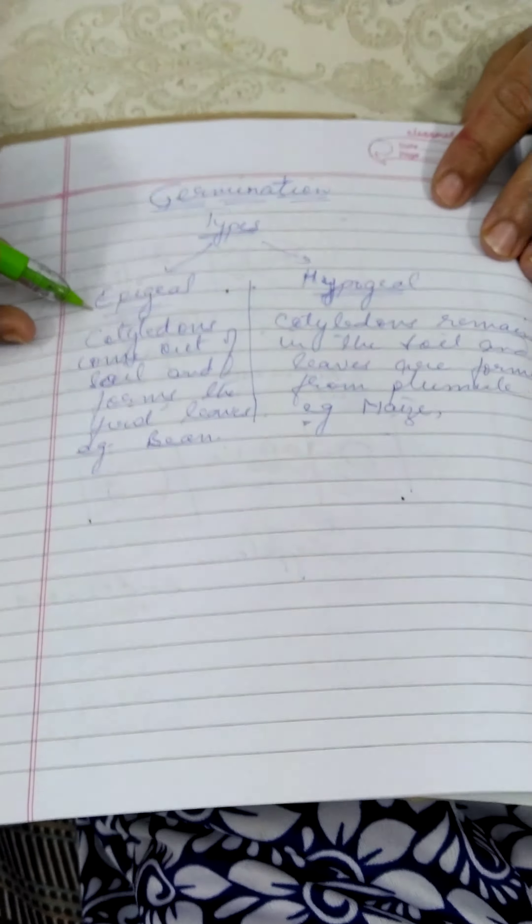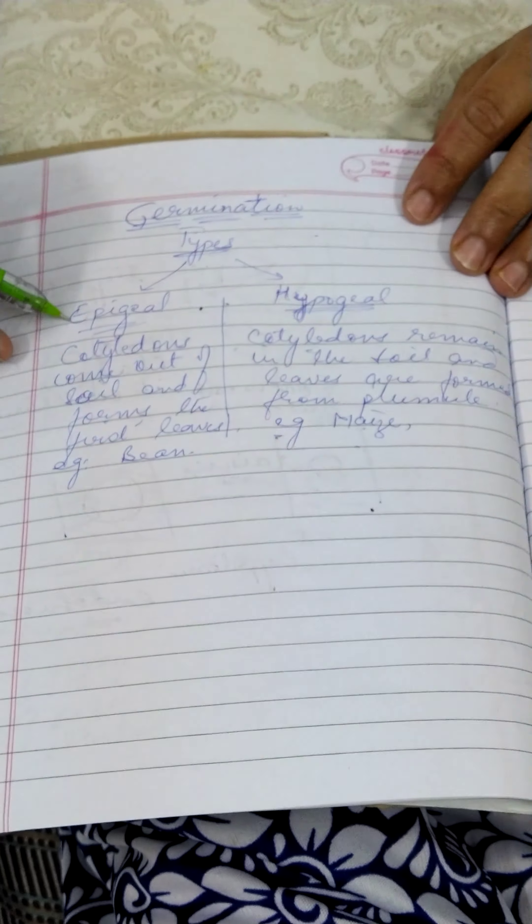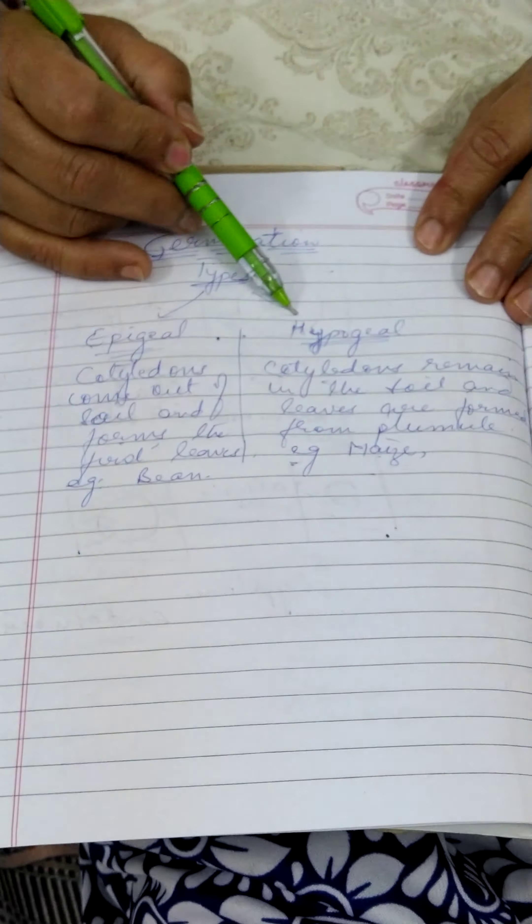The embryo has the plumule and the radicle. The plumule forms the stem part of the plant and the radicle forms the root part of the plant. Now let's see the types of germination. Germination is of two kinds: epigeal and hypogeal.